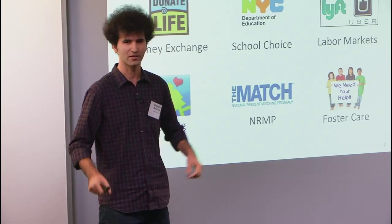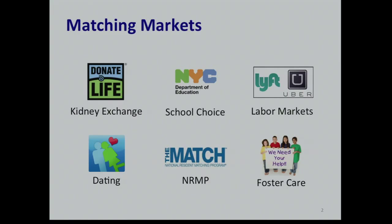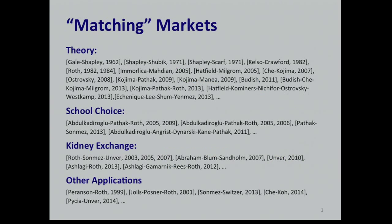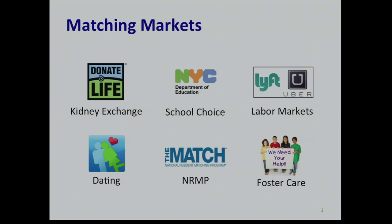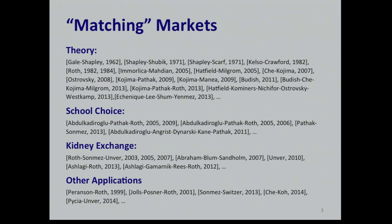For this audience, I don't have to prove that matching markets are important. They surround us: kidney exchange, school choice, labor markets, national residency matching program, and dating markets. These are all matching markets in which not only you have to choose, but also you have to be chosen, and prices do not do all the work. Computer scientists and economists have spent a huge amount of time, starting from Gale and Shapley in 1962, to analyze these markets.